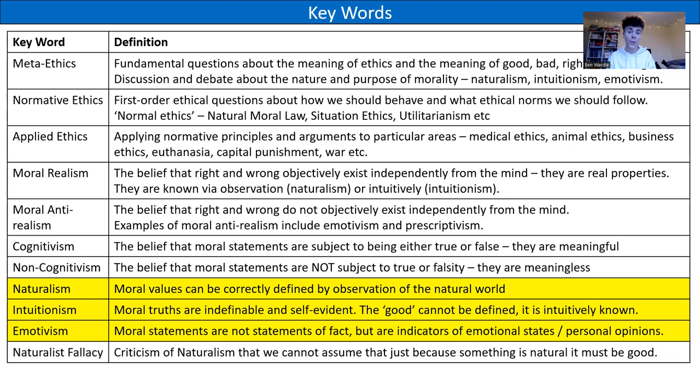Meta-ethics involves discussion and debate about the nature and purpose of morality. We're going to look at three different approaches: naturalism and intuitionism, which are examples of moral realism, and then emotivism, which is an example of moral anti-realism. We'll be making lots of links to religious language and the verification principle when looking at emotivism, because it is principally associated with A.J. Ayer, whom we know well from religious language studies.